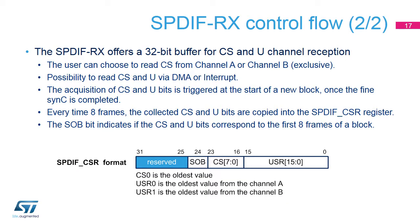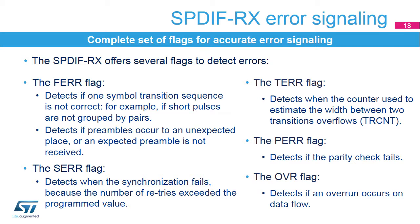The SPDIF-RX offers a 32-bit buffer for the reception of the CS and U channels. The application can read the received control information in the SPDIF CSR register using DMA or interrupts. The SPDIF CSR register contains 8 bits of CS coming from the selected channel (channel A or B), 16 bits of U (the U-bit of channel A and U-bits from channel B), and 1 bit indicating if a start of block has been detected.